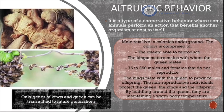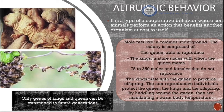Another type of behavior is cooperative behavior. Cooperative behavior is when an animal cooperates to help other individuals of the same species, sometimes making a self-sacrifice without getting any direct benefit. A specific kind is called altruistic behavior — where some animals perform an action that benefits another organism at a cost to itself. A well-known example is mole rats living in underground colonies.